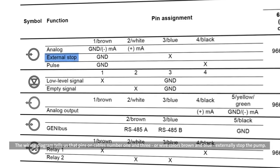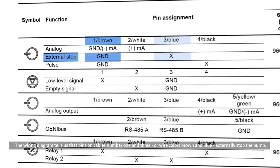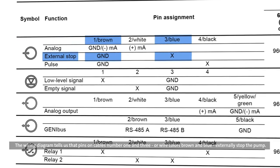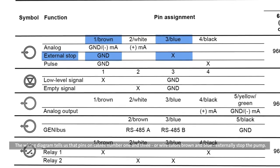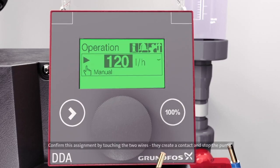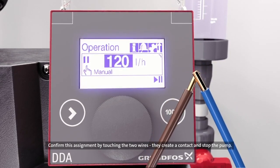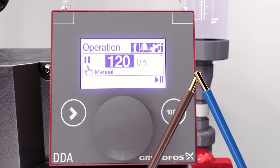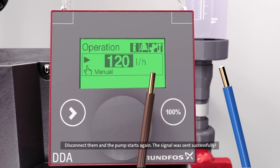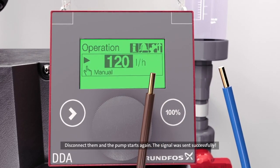The wiring diagram tells us that pins on cables number 1 and 3, or wire colors brown and blue, externally stop the pump. Confirm this assignment by touching the two wires. They create contact and stop the pump. Disconnect them and the pump starts again. The signal was sent successfully.